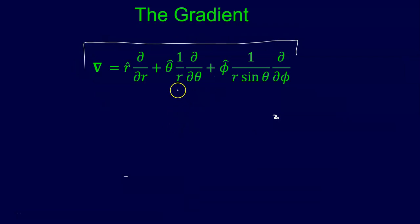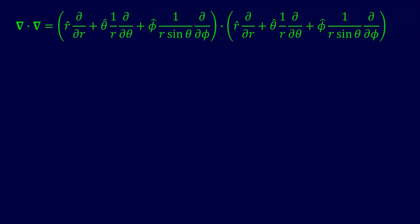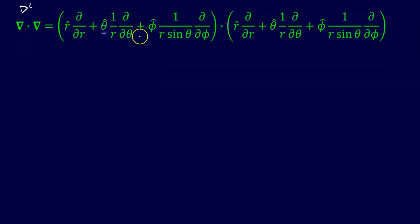So this is our first intermediate result: the gradient in spherical coordinates. It's a little bit more complicated, with extra factors, because this is a more complicated system than a Cartesian system. Now what we want to do is find the Laplacian, which we sometimes write as the gradient squared — it's really taking the gradient and dotting it with itself. In Cartesian coordinates dot products are pretty easy, but here it's a little bit trickier because the unit vectors depend on the variables we're talking about.